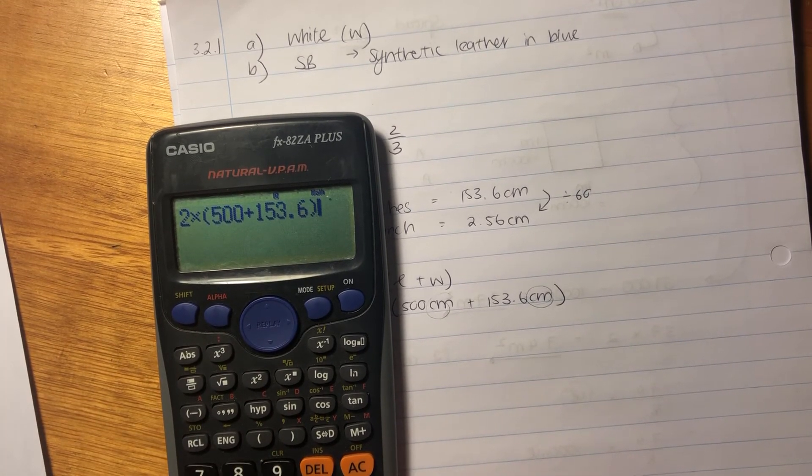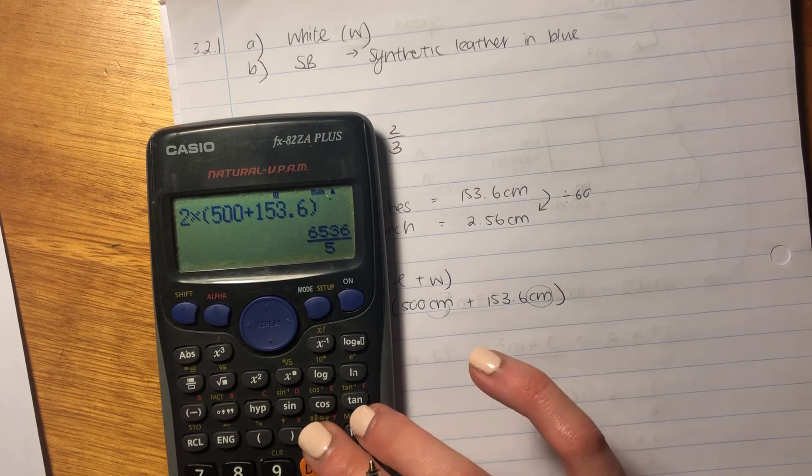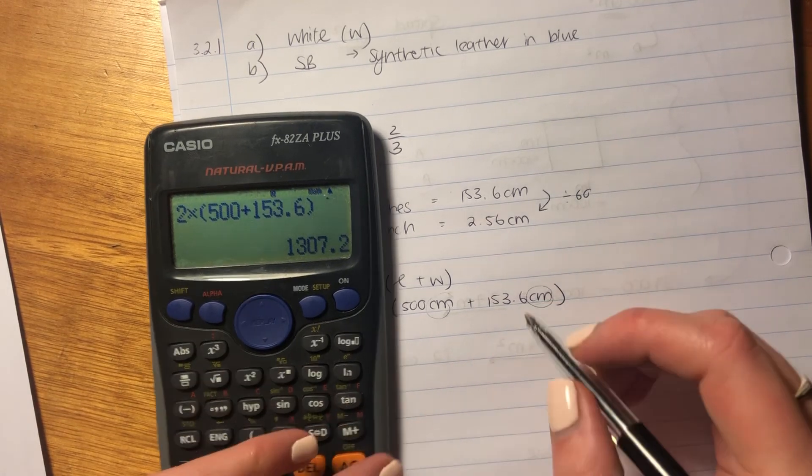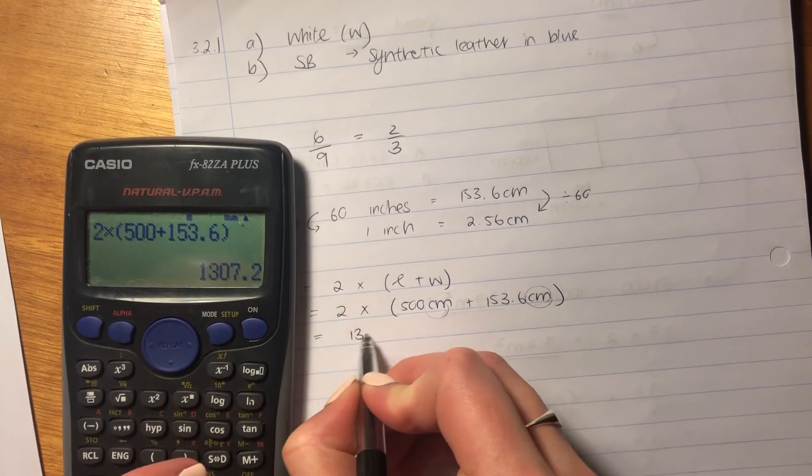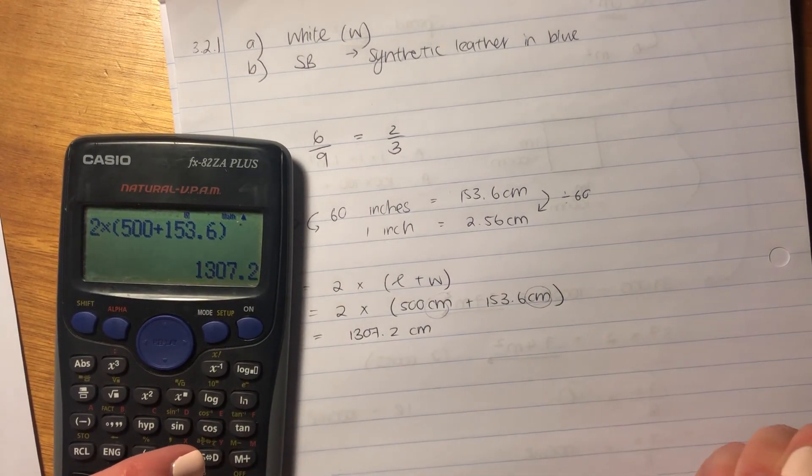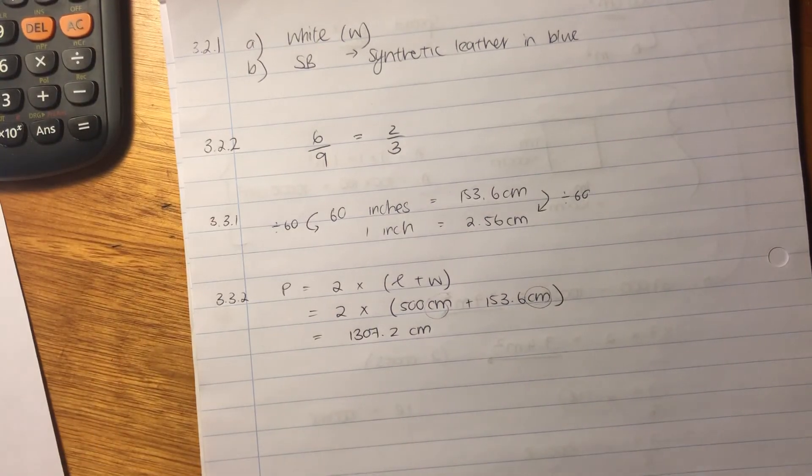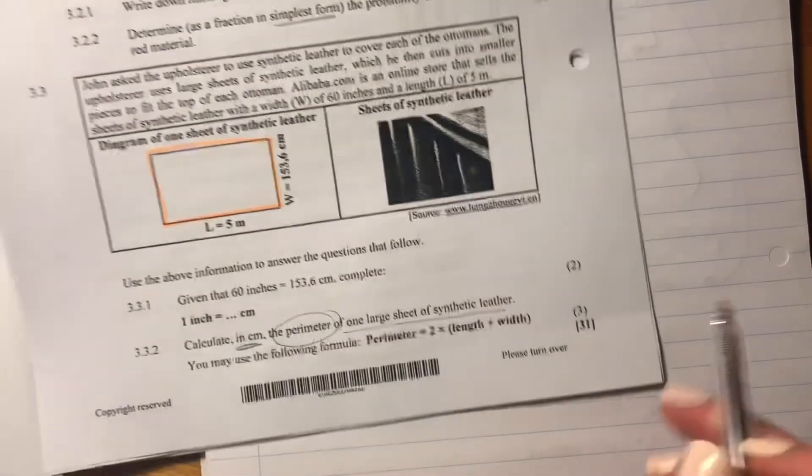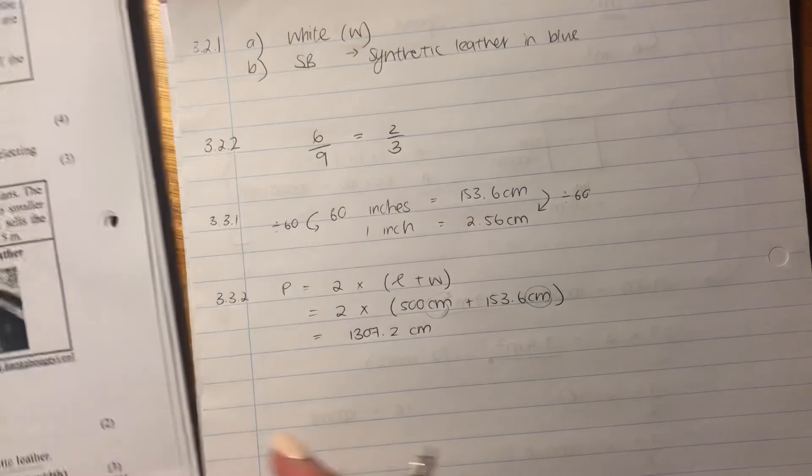Let's put this into our calculator and make sure that we have done this correctly. Remember, the biggest thing here is to make sure that you have put it into your calculator correctly. So our answer is 1307.2 centimeters. That is the perimeter of one sheet. Let's check we've answered the question. We have answered. And that's the end of that question.